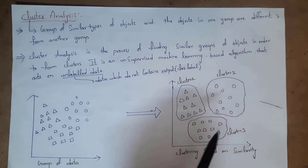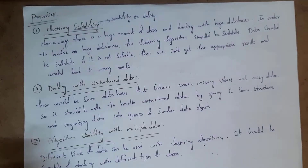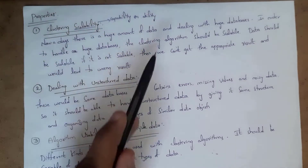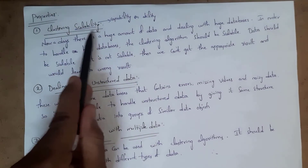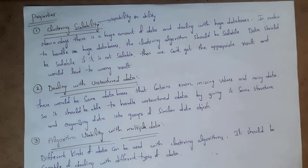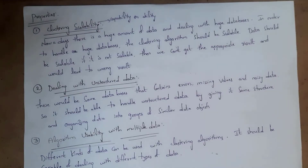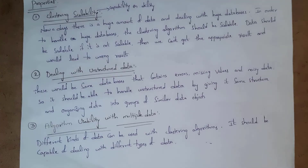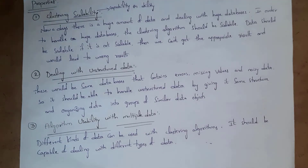These are the properties of cluster analysis. The first property is cluster scalability. Scalability means capability or ability. Nowadays there is a huge amount of data and we are dealing with huge databases, so the clustering algorithm should be scalable in order to handle that huge amount of data. If the clustering algorithm is not capable of handling it, we may get wrong results.